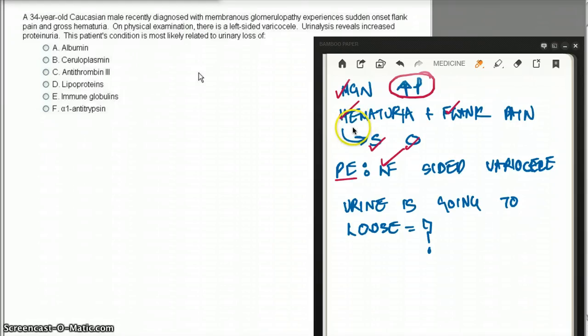But in these kind of questions, when they already tell you that this is nephrotic syndrome, there are other things they are also telling you. They are telling you there is a left-sided varicocele. The question says the patient's condition is most likely related to urinary loss of...